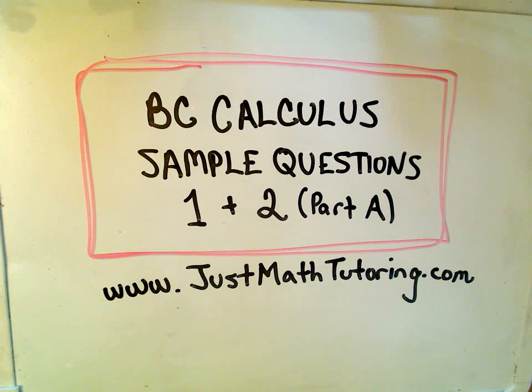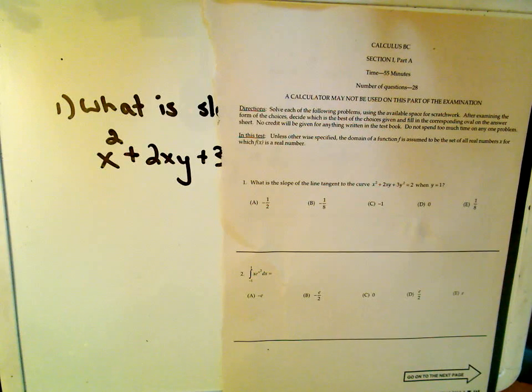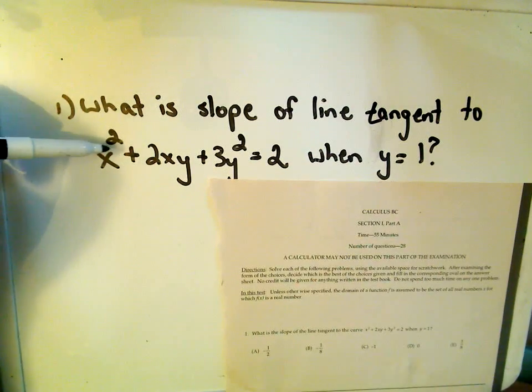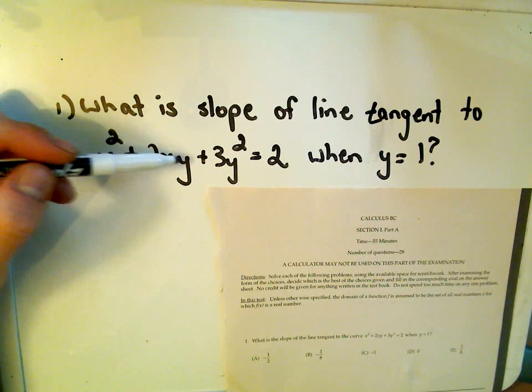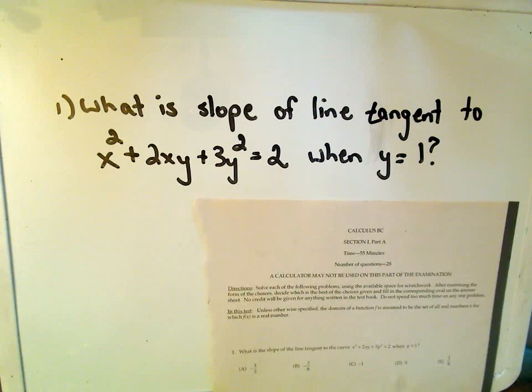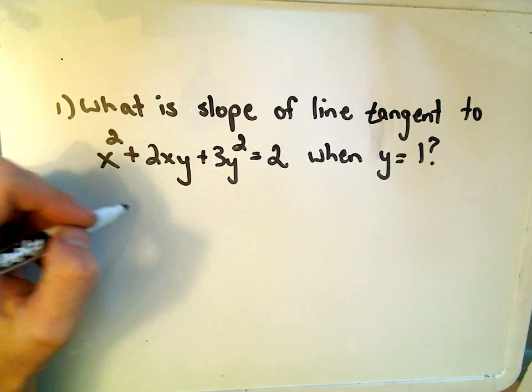Okay, in this video I'm going to start working on some BC Calculus sample questions, and this is going to be question 1 and 2. So the first problem here, it says, what is the slope of the line tangent to the curve x squared plus 2xy plus 3y squared equals 2 when y equals 1? Well they're asking about tangent lines, so we know that we're going to have to find the derivative.